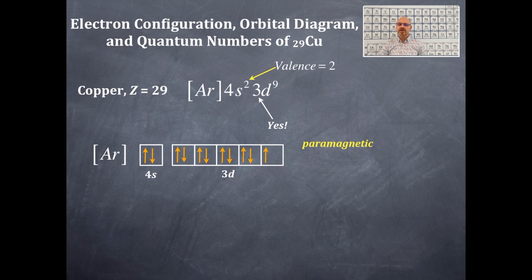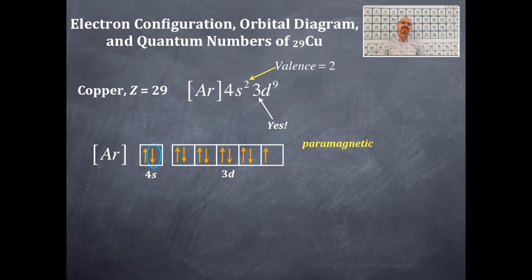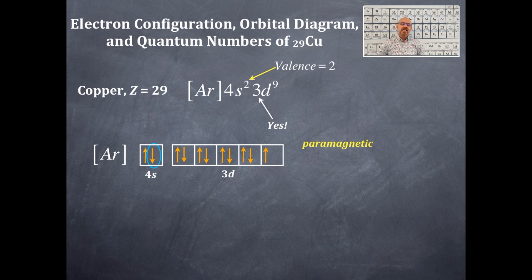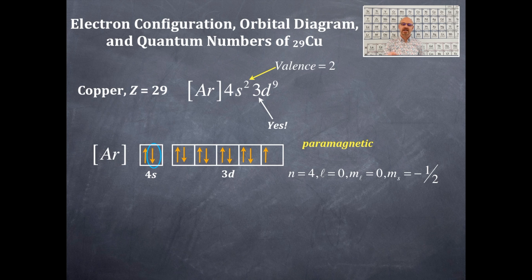Next, we'll get a set of four quantum numbers for a particular electron — I'm picking a random electron, not the last electron in copper. The electron is in the 4s orbital. The principal quantum number n is 4. The angular momentum quantum number l is 0 for an s-type orbital. There's only one box, so the magnetic quantum number ml is 0. The arrow is downward-facing, so the spin quantum number ms is negative one-half.